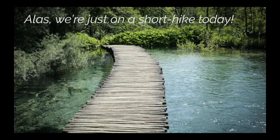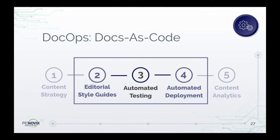We're not going to go in depth on any one of those things — each is a topic unto itself that could have books written about it. We're really going to focus in on a quick survey of the part of DocOps that forms the core of Docs as Code. We'll talk a little about editorial style guides because automated testing really builds upon them. Your editorial style guide is the embodiment of what you want your documentation to look like and how it should read, and because of that it becomes the foundation for what quality means in your organization.